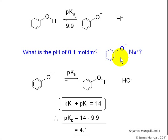Since the phenoxide ion is a weak base, we want to know the Kb value for this ion reacting with water to form phenol and hydroxide ions.